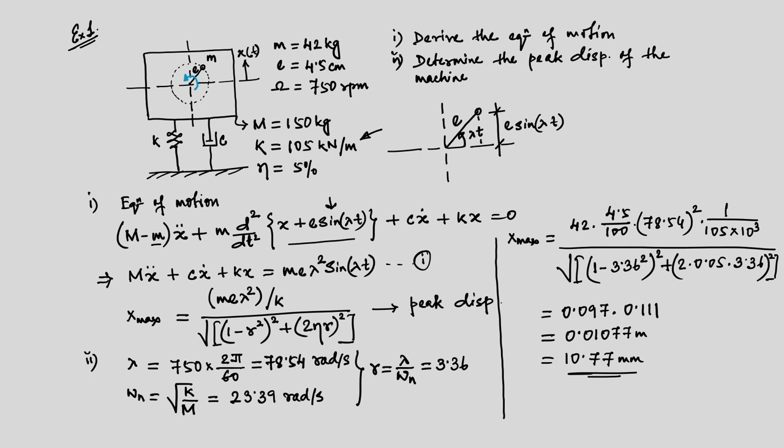This shows how to solve problems involving rotational unbalance using the developed theory to find the response of the structure. When designing the machine mount, the peak response is the main factor; we must design it such that it can withstand this level of deformation. This problem is now clear for a rotational unbalance acting on a single-degree-of-freedom system.